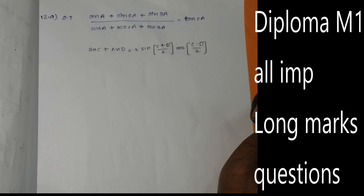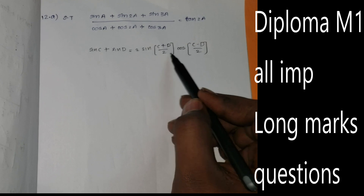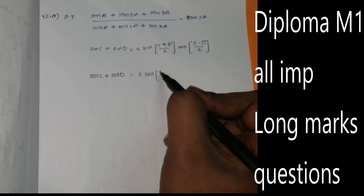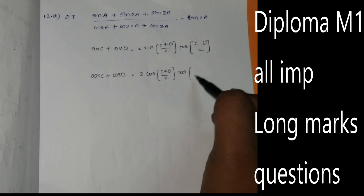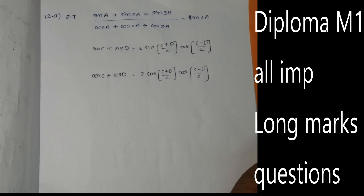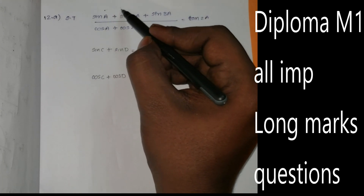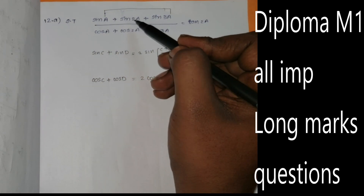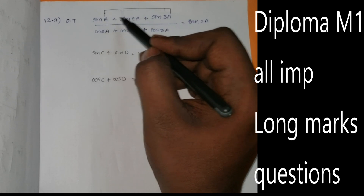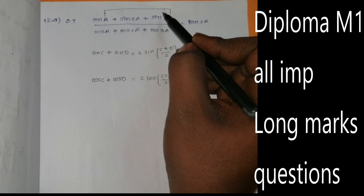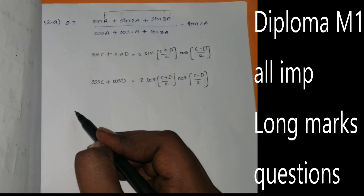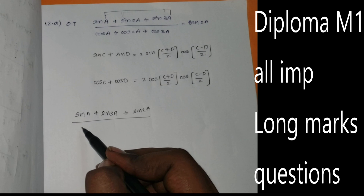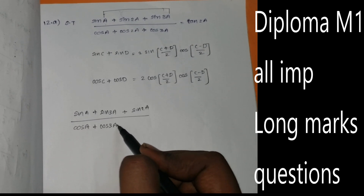Using these formulas: sin C plus sin D equals 2 sin((C+D)/2) cos((C-D)/2), and cos C plus cos D equals 2 cos((C+D)/2) cos((C-D)/2). Preferably, I will choose the first and last terms — sin A and sin 3A in the numerator, and cos A and cos 3A in the denominator.